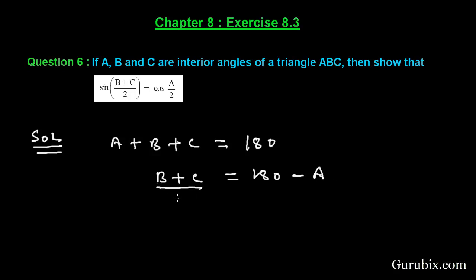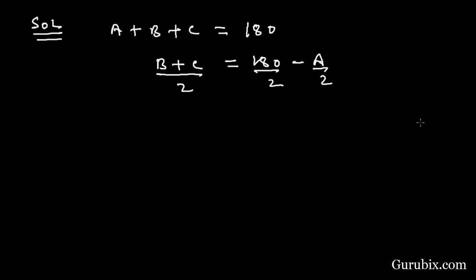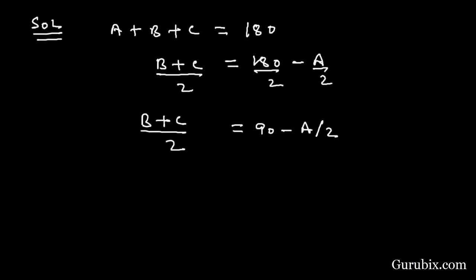If we divide both sides by 2, we get (b+c)/2 = 90° - a/2. Now we shall write sin before (b+c)/2 and sin before (90° - a/2).